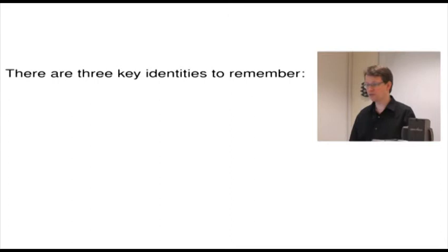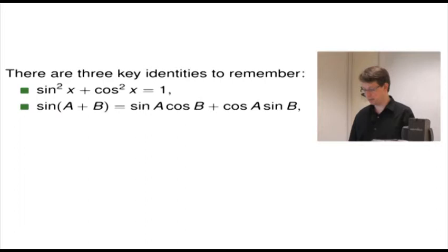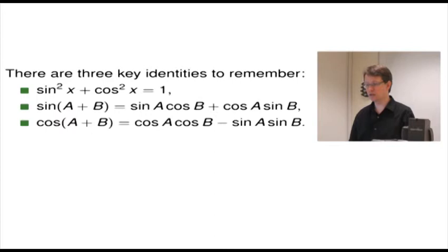First of all, a very important one: sine squared x plus cosine squared x equals 1. Next, we have sine(a + b) equals sine a cos b plus cos a sine b. And the last one is cosine(a + b) equals cosine a cosine b minus sine a sine b. Those last two are called the addition formulae.